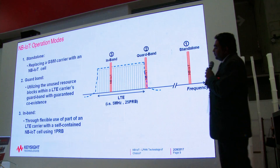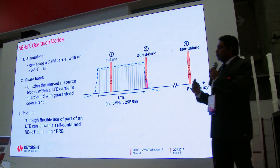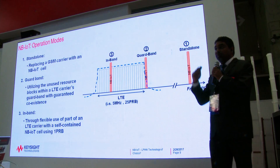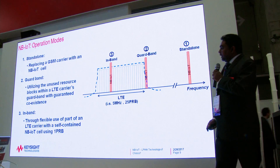NB-IoT has three different operating modes, and operators set a clear strategy on how they want to deploy their spectrum. The first is standalone mode, where many carriers are looking to refarm their GSM spectrum. Since the GSM channel bandwidth is 200 kHz and NB-IoT uses 180 kHz, NB-IoT fits naturally into a GSM carrier.